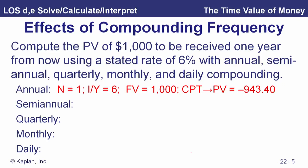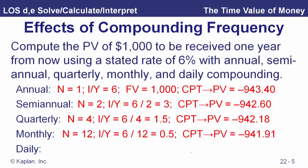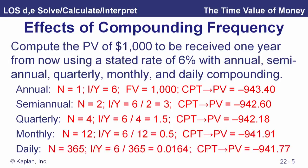With semi-annual compounding, the effective annual rate is a little higher, so our present value is a little lower. Using the same terms for quarterly, monthly, and daily compounding, these values are pretty close together but still getting smaller moving from monthly to daily discounting. With N equals 365 and an interest rate of 0.0164%, the present value is $941.77. In each case the payment is implicitly zero — no money in or out of the account over the one-year period.